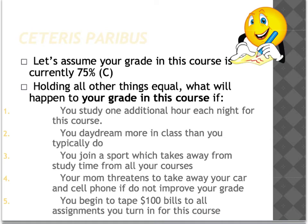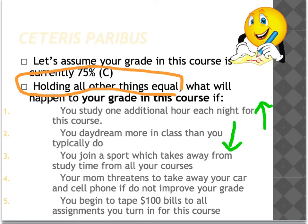For example, suppose you currently have a C — 75% — in this course. Holding all other things equal, Ceteris Paribus, what happens if you study an additional hour each night? Your grade goes up. What if you daydream more in class? Your grade goes down. What if you join a sport or get a girlfriend? That takes away time and your grade drops. These 'what if' questions are legitimate, but you must only change one variable at a time.